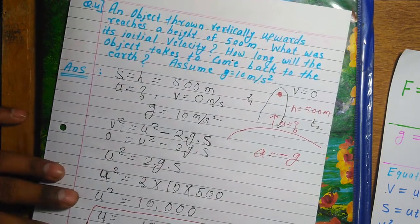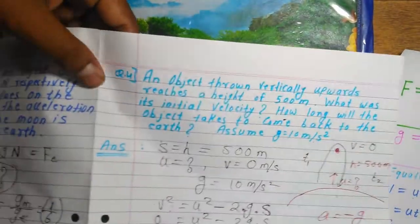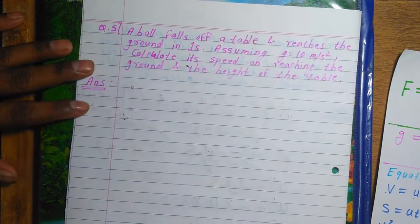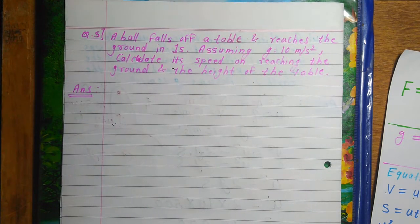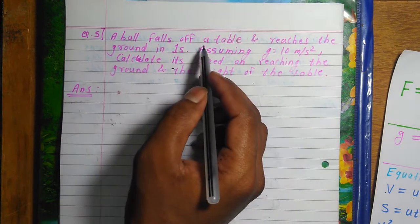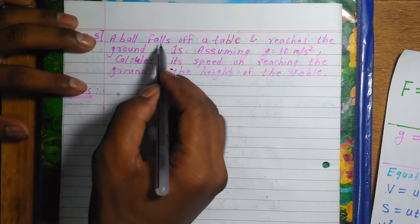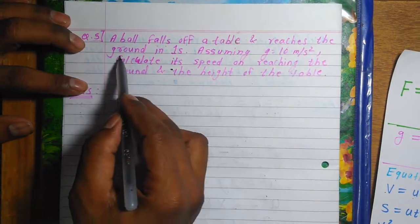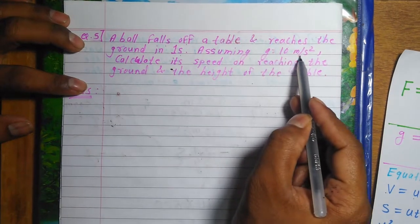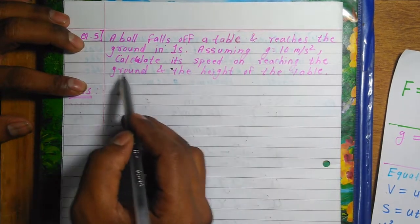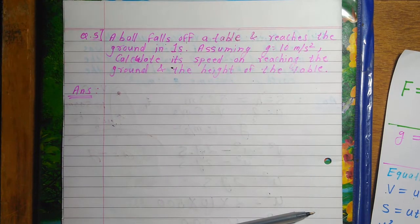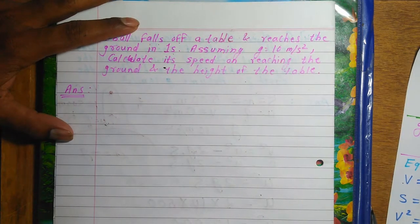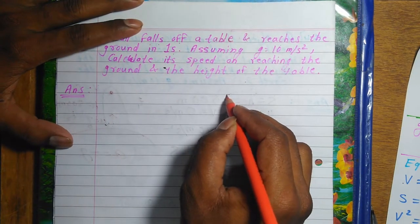After Question 4, we move to Question number 5, which is even more interesting. Question number 5: A ball falls off a table and reaches the ground in 1 second. Assuming g = 10 m/s², calculate the speed on reaching the ground and the height of the table. This is a fun real-world problem — a table, a ball, and gravity.